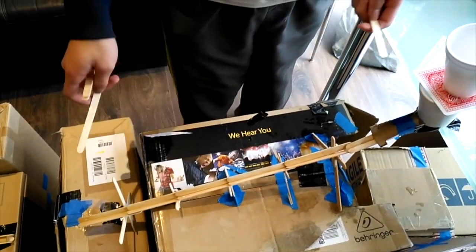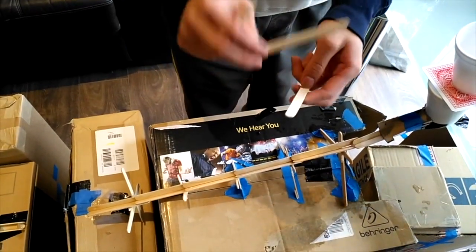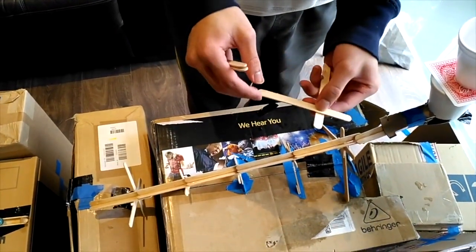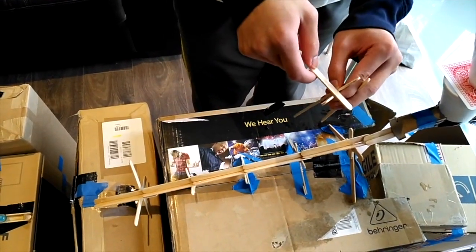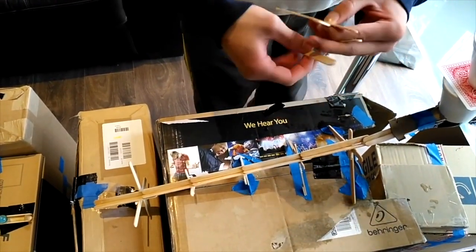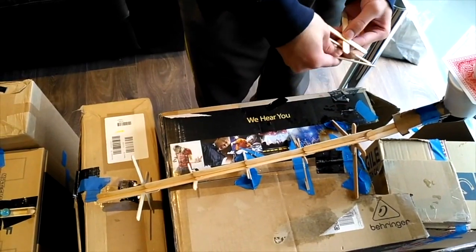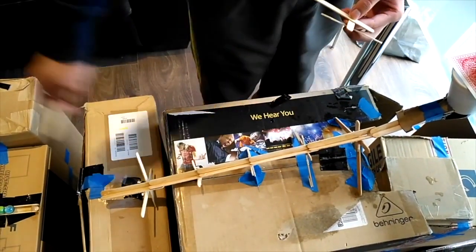So for this section, how we made it, we glued two popsicle sticks together to make an X, and then we used another popsicle stick to glue it like this. Eventually, we glued a whole chain of them to create this ramp.